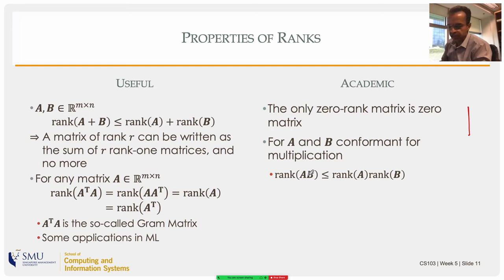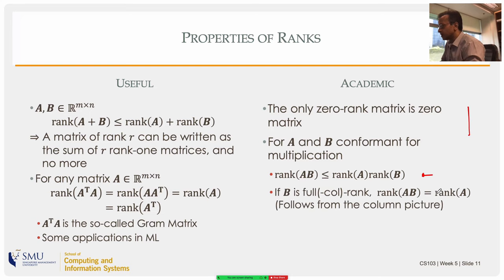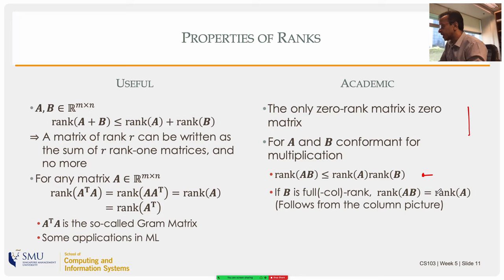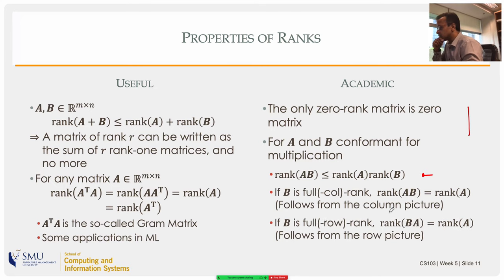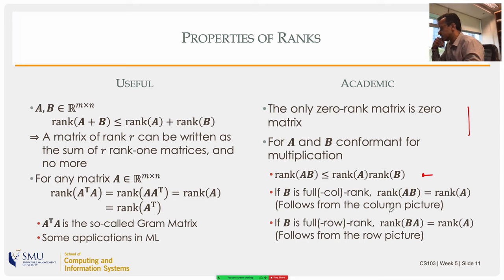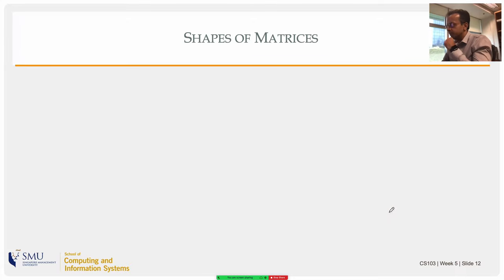Another property similar to the summation property: the rank of a product AB is less than or equal to the minimum of the ranks. If B is a full column rank matrix, then rank(AB) equals rank(A) — this comes from the column picture of matrix multiplication. If B is a full row rank matrix, then rank(BA) equals rank(A) — from the row picture.